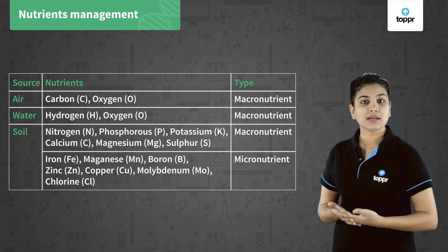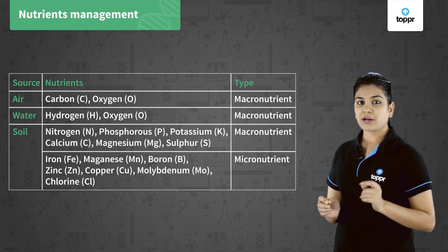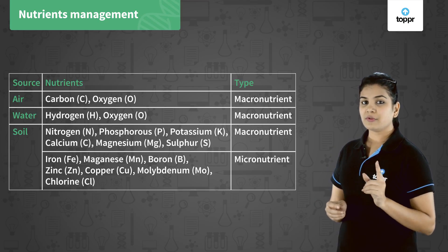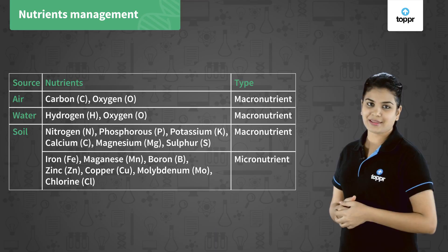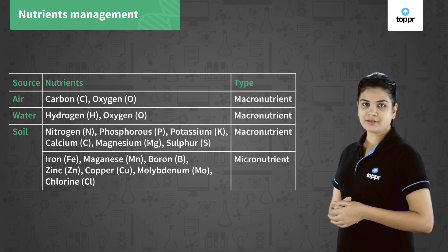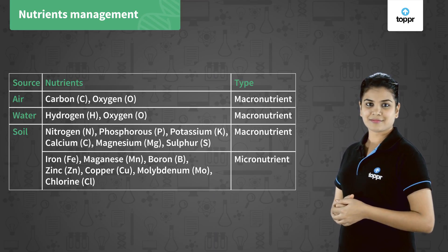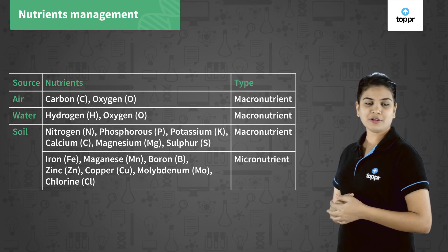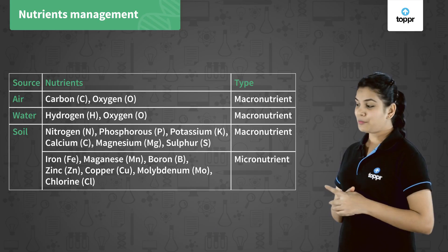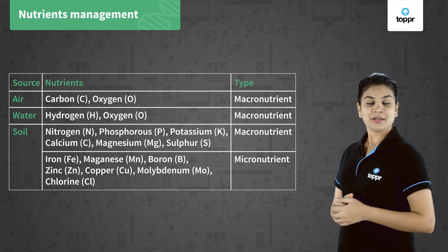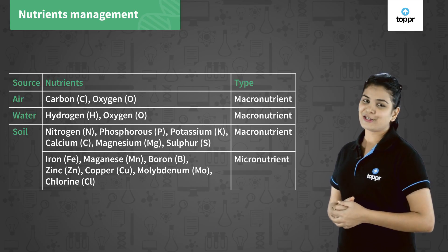Micronutrients are those which are required in small quantities. They include iron, manganese, boron, zinc, copper, molybdenum, and chlorine.